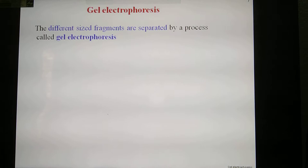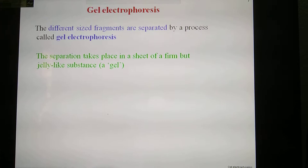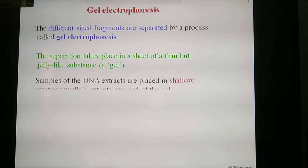Next, gel electrophoresis. Different sized fragments are separated by a process called gel electrophoresis. The separation takes place in a sheet of a firm but jelly-like substrate called gel. Samples of the DNA extracts are placed in shallow cavities, that is wells.